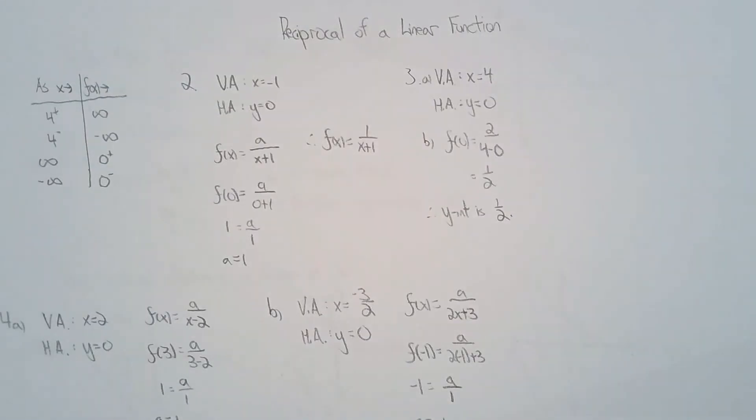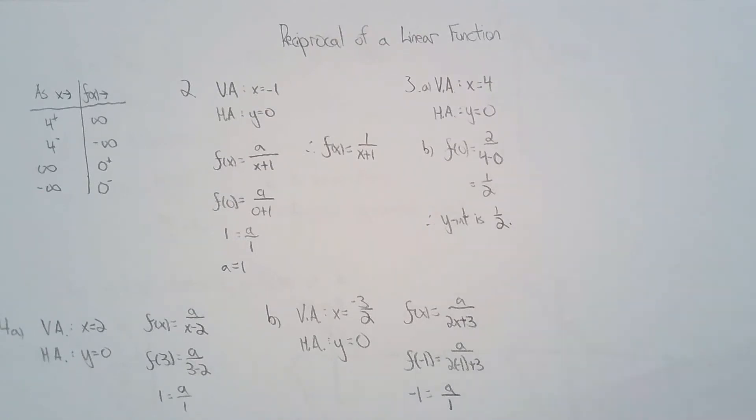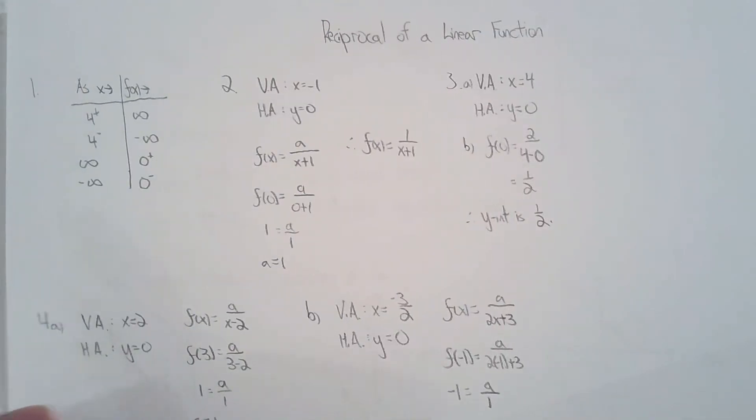So the first one is basically just trying to determine the end behavior and behavior near the vertical asymptote. It's summarized in the table so we can do the calculation: approach four from the left, approach four from the right, and then let x be larger and larger positive numbers or larger and larger negative values.